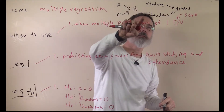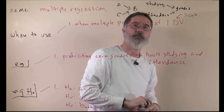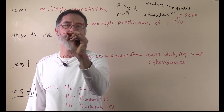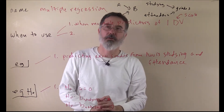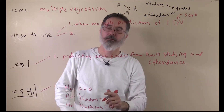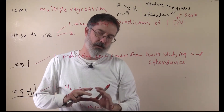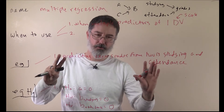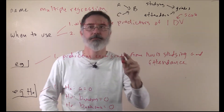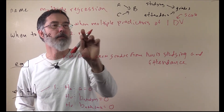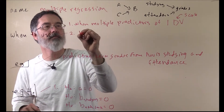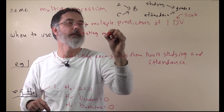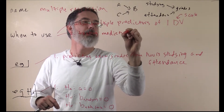Another use that statisticians have for multiple regression is to see if one variable mediates the relationship between two other variables. This use is for testing mediation.